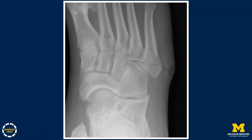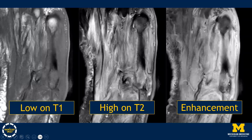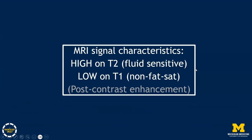The next step to confirm osteomyelitis is MRI. On MRI of the same patient's foot, axial images focusing on the lateral midfoot show soft tissue ulceration with underlying low-signal foci of gas and a non-enhancing tract on post-contrast images. In the adjacent fifth metatarsal base, there are marrow signal changes: low signal on T1-weighted images, high signal on T2-weighted images, and enhancement on post-contrast images — consistent with osteomyelitis. Post-contrast enhancement is helpful but not totally necessary to make the diagnosis.